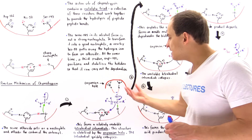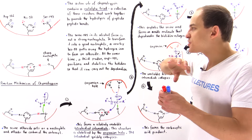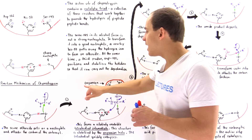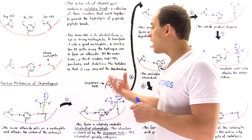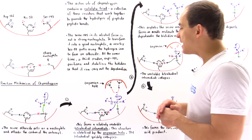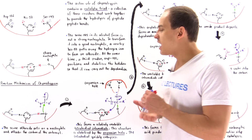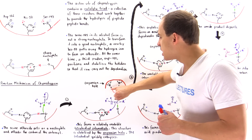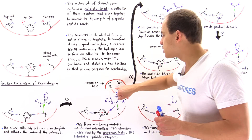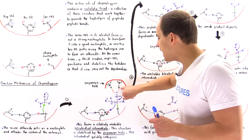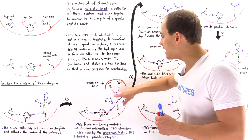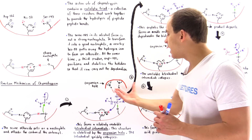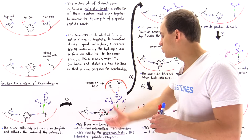Because of the instability of this intermediate, a special region on chymotrypsin known as the oxyanion hole or oxyanion pocket basically interacts with the negative charge on this oxygen. Inside this pocket, we have nitrogen atoms that contain H atoms, and these partially positive H atoms can interact with the fully negative oxygen atom. The oxyanion hole stabilizes this tetrahedral intermediate.